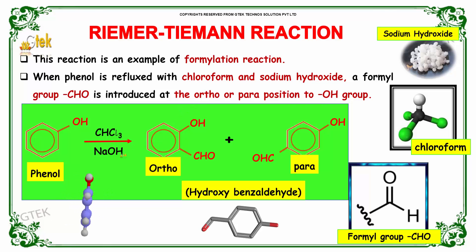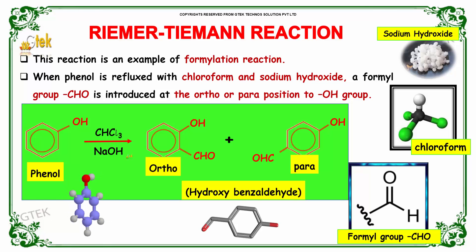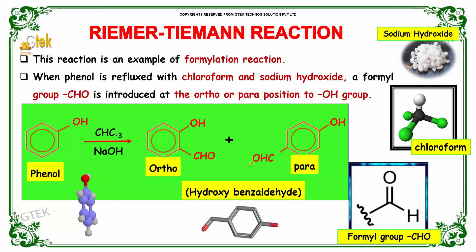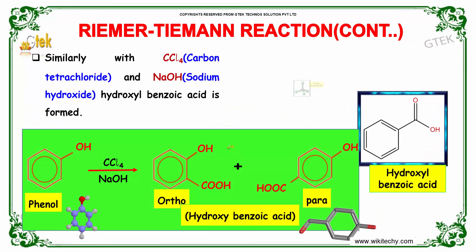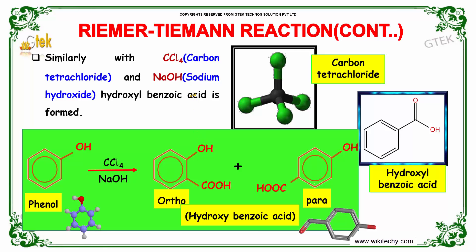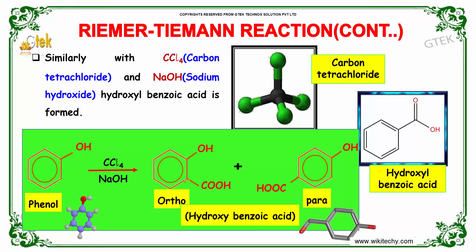Phenol when made to react with CHCl₃ along with NaOH, we would obtain ortho and para hydroxybenzaldehydes. Similarly, with CCl₄ and NaOH, hydroxybenzoic acid is formed. That is, phenol when made to react with CCl₄ and NaOH, we would get ortho and para hydroxybenzoic acid.